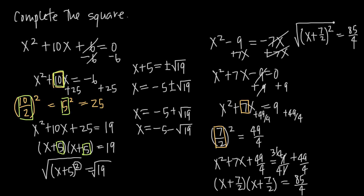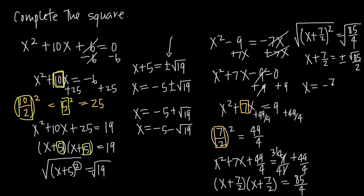To solve for x, we take the square root of both sides. The square and square root cancel on the left, giving x plus 7 halves. On the right, we get positive or negative square root of 85 over 4. The square root of 4 is 2, so the denominator becomes 2. The square root of 85 cannot be simplified. Subtracting 7 halves from both sides gives x equals negative 7 halves plus or minus root 85 over 2.